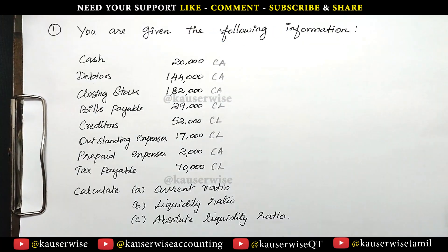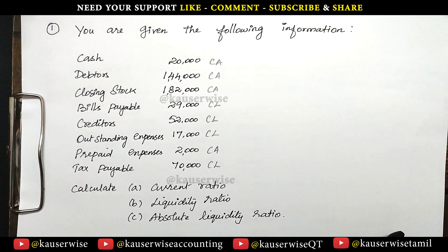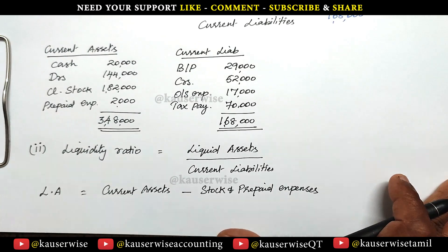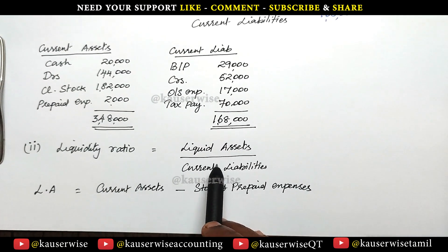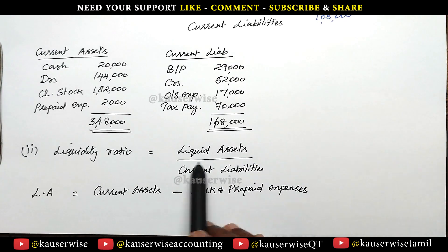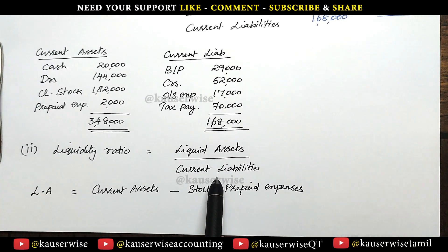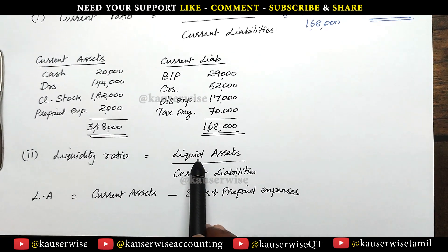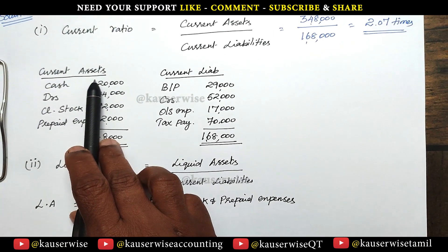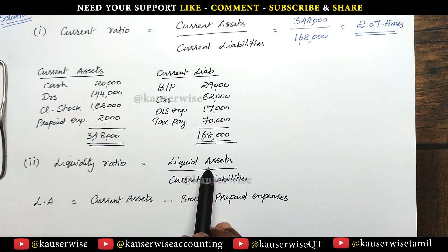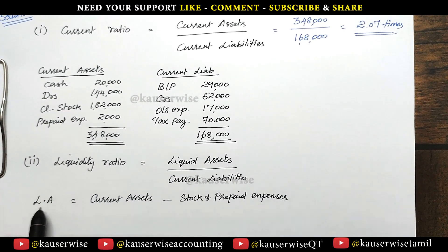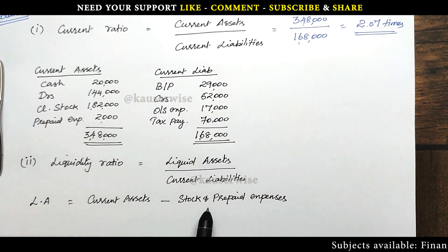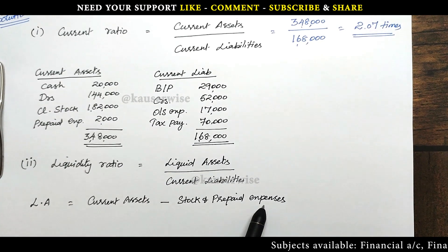Now we are going to calculate the second one — liquidity ratio. The formula is liquid assets divided by current liabilities. There is a difference between liquid assets and current assets. The formula to find out liquid assets is: liquid assets equals current assets minus stock and prepaid expenses.